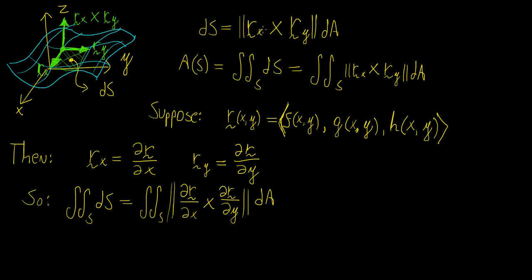Note that r subscript x means the first partial derivative of r with respect to x, and similarly for y. The surface area is defined by the integral of the magnitude of the cross product, which we can rewrite in longhand notation. We define a parametric surface, take partial derivatives with respect to x and y, take the cross product, take the magnitude, and integrate using a regular double integral.